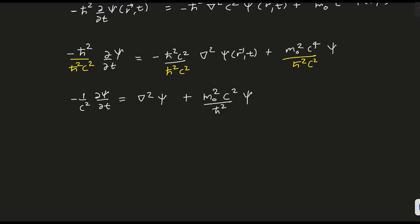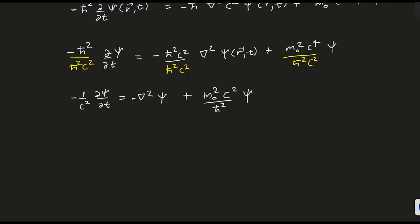Sorry, there was a minus sign here. If you bring this to the left hand side, it will become positive. You will have del² minus 1/C² del²/del t² of ψ. Also bring this to the left hand side: minus M₀² C²/ℏ² into ψ equals 0.